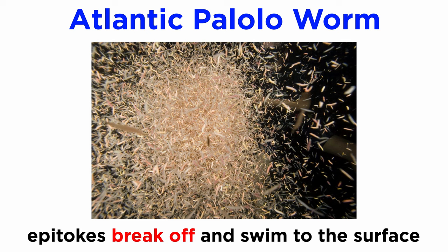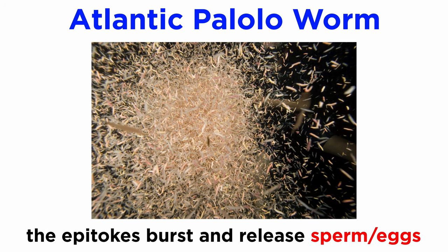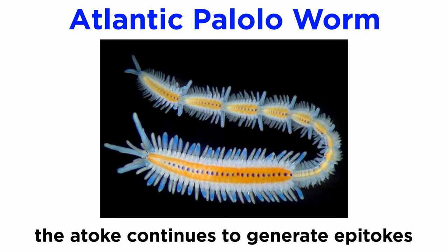Taking the Atlantic palolo worm as an example: they live in burrows around coral reefs and are usually solitary. When the swarming period begins, the atoke produces new individual epitokes — the reproductive individuals whose bodies contain mainly gametes, or sperm and eggs. The epitokes break off all at once and swim to the surface so that just before sunrise the sea is covered with them. Then just at sunrise they burst, freeing eggs and sperm that fertilize in the water column. Meanwhile, the atoke continues to survive under the sea and begins to generate new epitokes for the next spawning swarm.